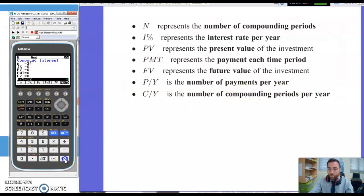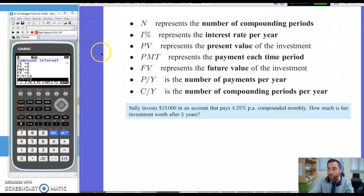And you can see here I've got it at 12 for payments per year and compounding periods per year. Let's have a look at a question to see if we can make a bit more sense of all of this stuff.